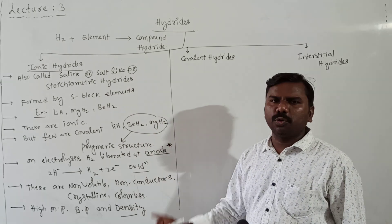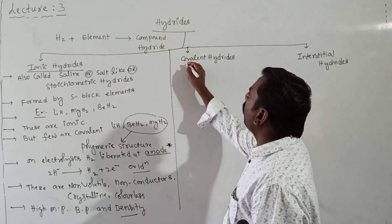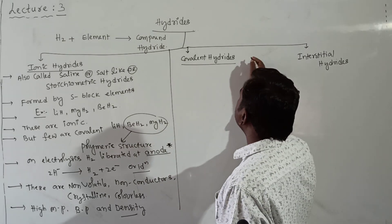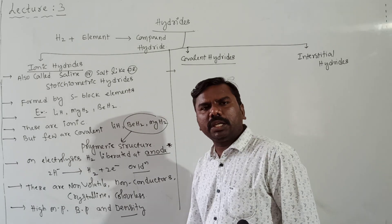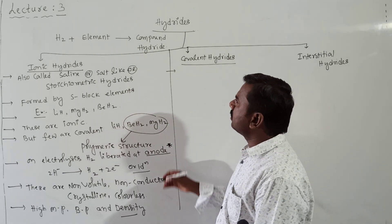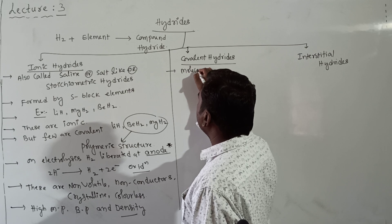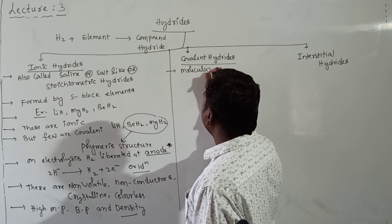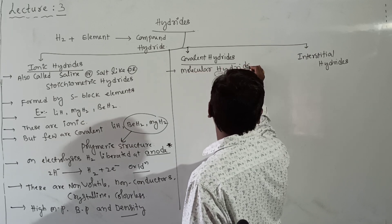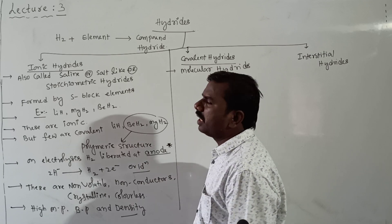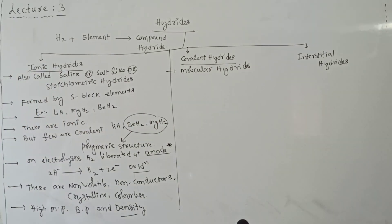Properties of ionic hydrides: they are non-volatile, non-conductors of electricity, crystalline in nature, colorless compounds, and have high melting points, boiling points, and density.